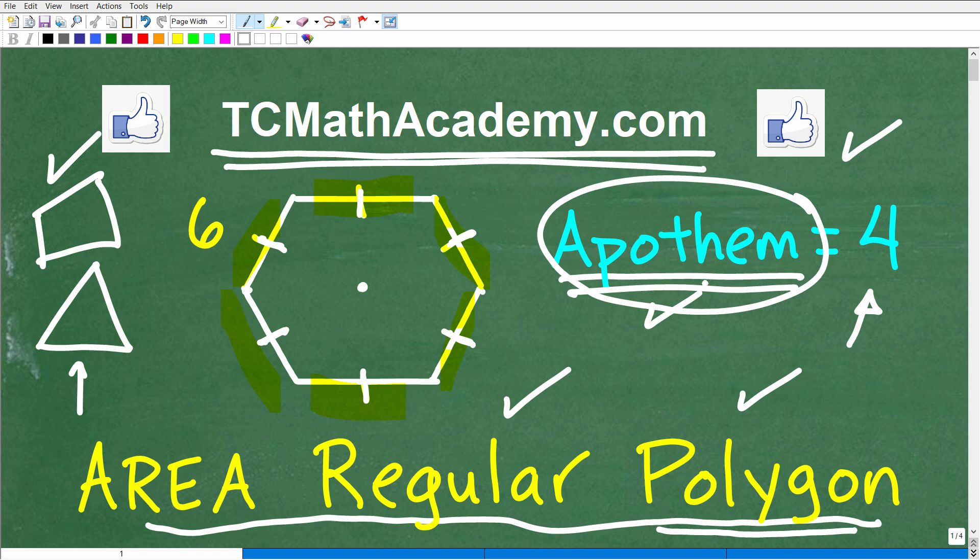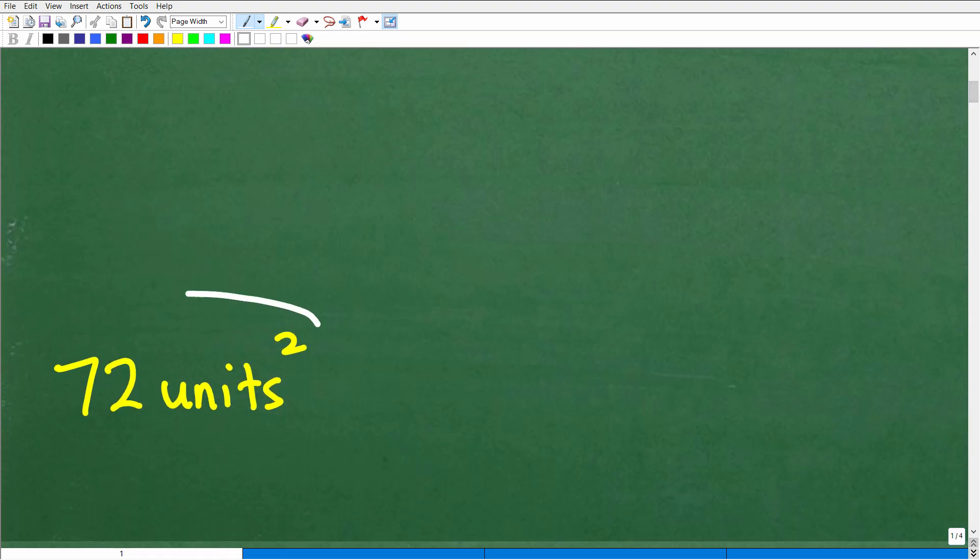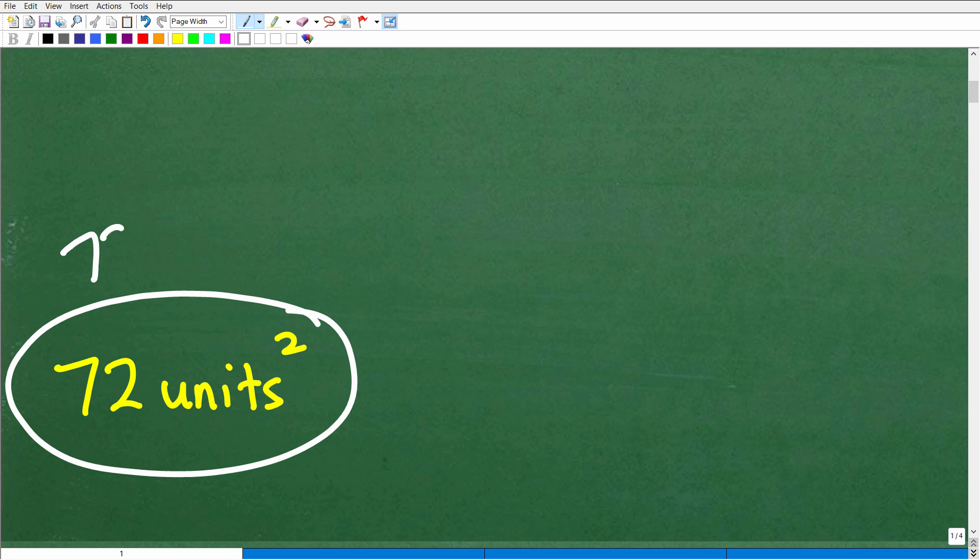So I'll wait to tell you what this means in just one second, but let's go ahead and take a look at the answer. What is the area of this regular polygon? Well, it happens to be 72 units squared. Now, if you put 72 as your answer, I will give you full credit.